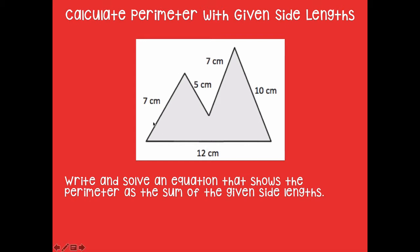You are going to write and solve the equation again that shows the perimeter as the sum of the given side lengths. So don't let the shape of this confuse you, you're still just going to find the sum of all of the side lengths by adding. So you would have your 7, 5, 7, 10, and 12. Go ahead and write that on your dry erase board, solve to find the perimeter, and then click play when you're ready to go over it together.